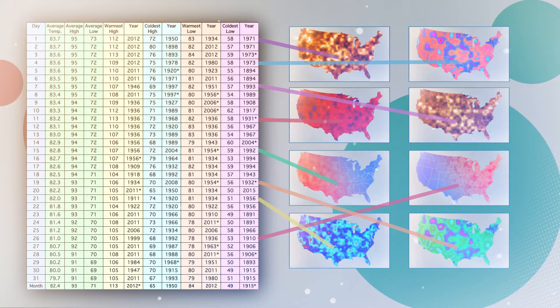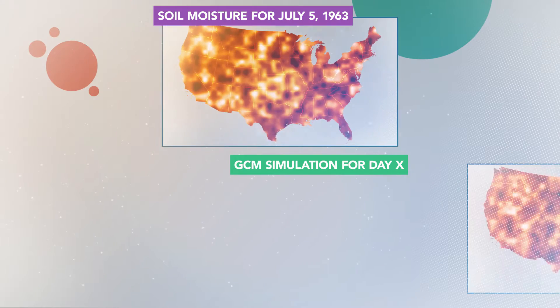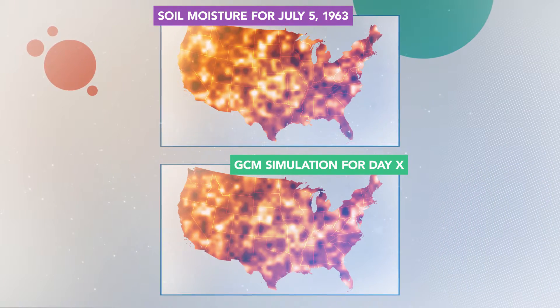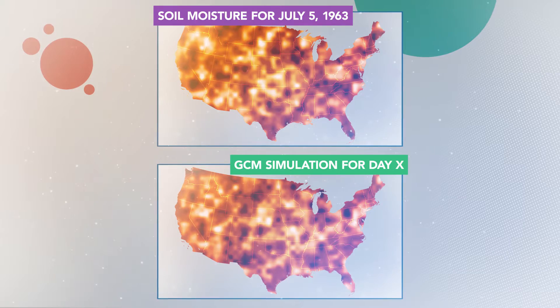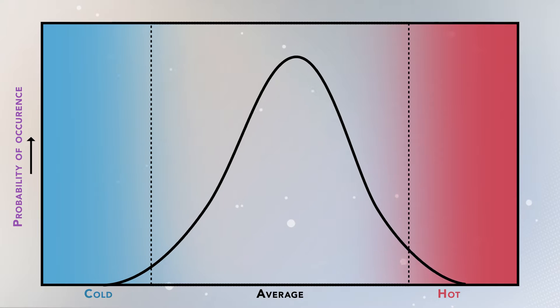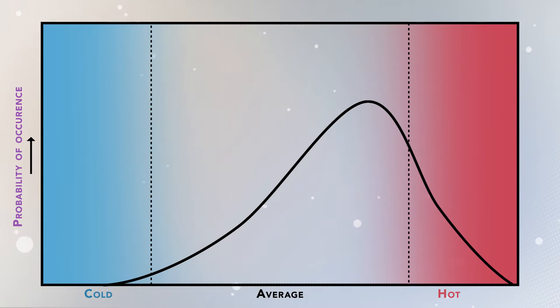Once we determine this statistical link, we compare every single historical map with a future map obtained from the GCM future projections to find the best match. After we select the historical map that most closely resembles the future map, we assign the corresponding value from the weather station data as our downscaled projection for that time period. We repeat the process until all the future maps are classified, and we generate a full time series of downscaled data. This technique is useful if our future maps look like our historical maps, but if the climate change is too much and the future maps are different than the historical ones, then this technique might not be as useful.